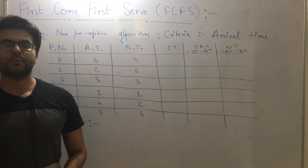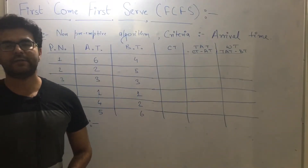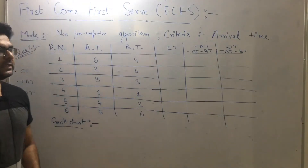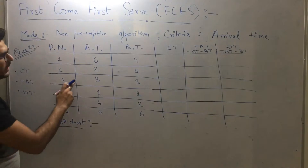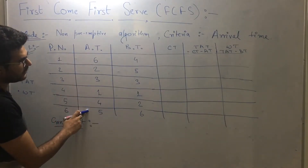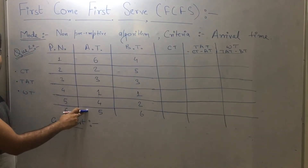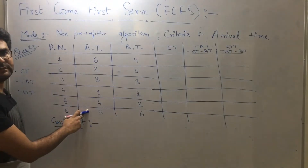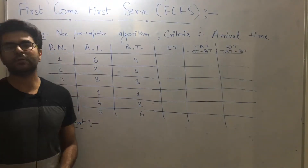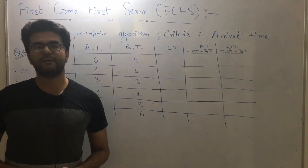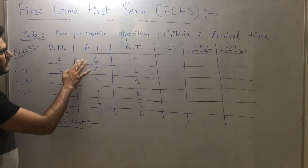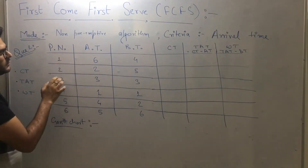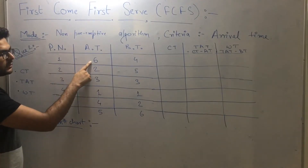Let's try to solve another problem based on the FCFS concept. In this question there are total six processes given inside the system and the arrival times are given randomly. In the previous question they gave arrival times in sequence, but in this question they have given different arrival times for every process. Process one arrived at time six.